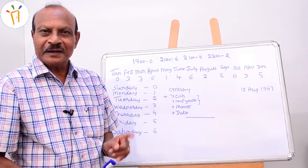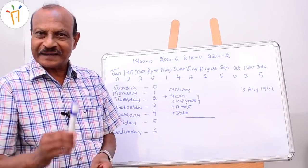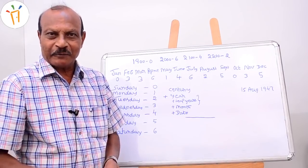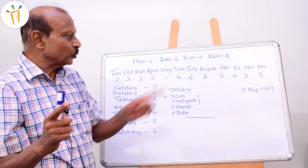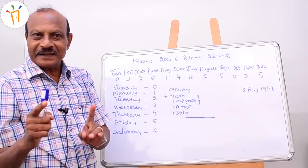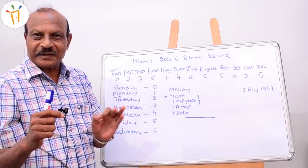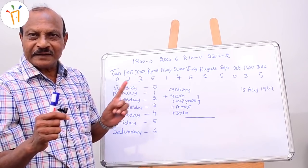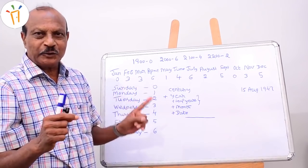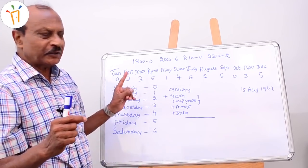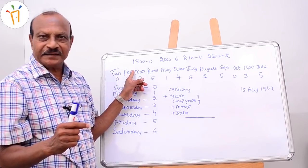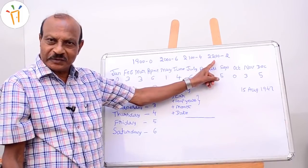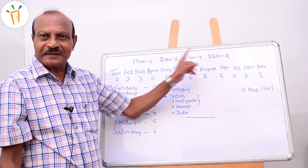Now I am giving you information about the 400-year calendar — you can follow along. This is from 1900 to 2200, a 400-year calendar. I am showing it to you. From this you can calculate the day of the week. I have given code numbers for these centuries: 1900, 2000, 2100, and 2200 — these are all called centuries.